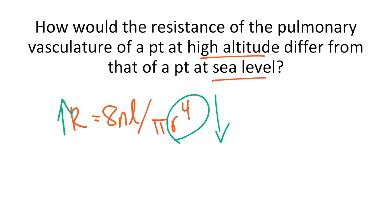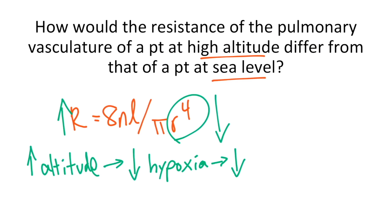Recall that hypoxia causes vasodilation in most tissues, but the lungs are an exception. Hypoxia in the lungs results in vasoconstriction, which is important because it allows shunting of blood to the regions of the lungs that are better oxygenated. So at increased altitude, patients are hypoxic, which results in vasoconstriction, so the radius gets smaller, which increases resistance. At high altitudes, patients will experience hypoxia, which will decrease the radius of the pulmonary vasculature and will increase the resistance.